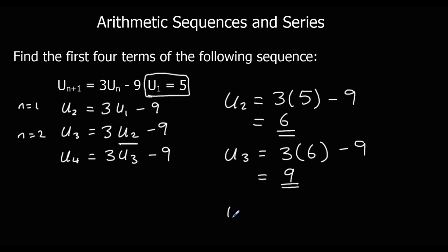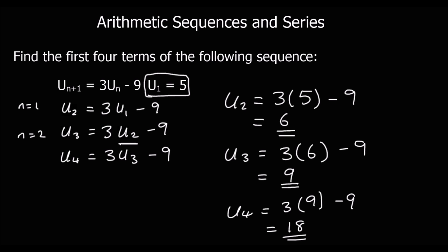And so on. The fourth term is going to be three lots of nine, take away nine. Twenty-seven take away nine is eighteen. And we could keep progressing like that. So in order to find the hundredth term, I'd have to do three times the ninety-ninth term, take away nine, and so on.